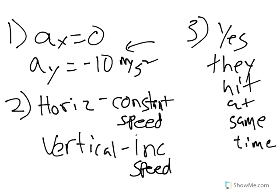Number two, for a horizontally launched projectile, how do the horizontal and vertical velocities compare? The horizontal are always constant — they move at a constant speed, it doesn't change. The vertical velocities are always increasing in speed.